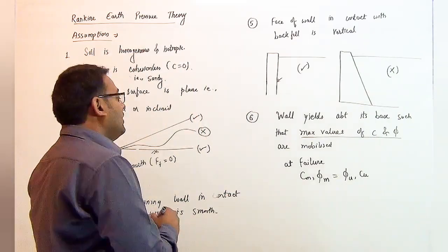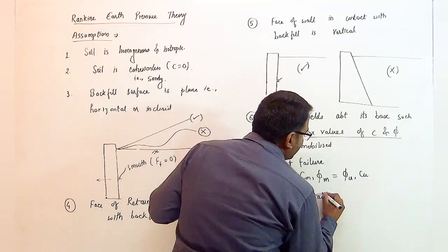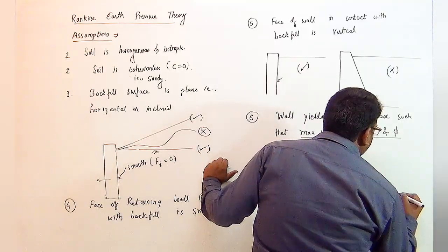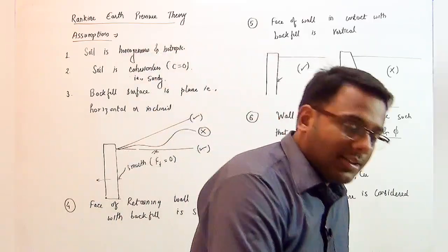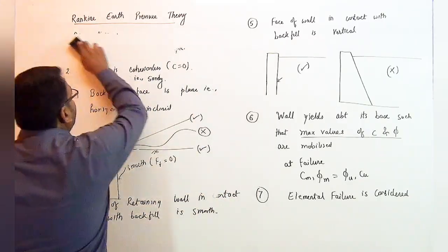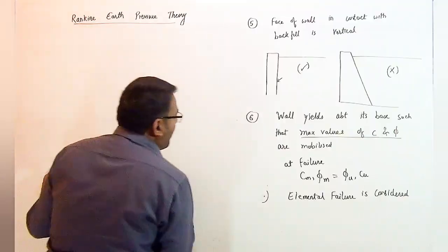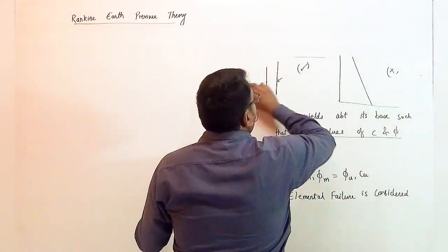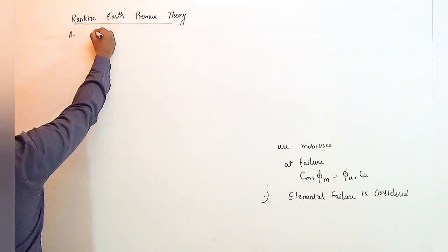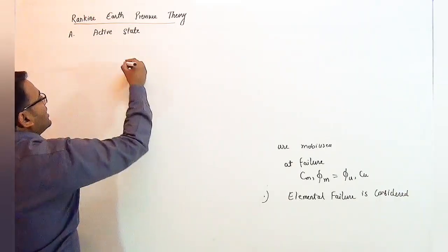Another important assumption is that elemental failure is considered. Elemental failure means that whenever you study the soil, you study with an element of that soil. The application of Rankine's earth pressure theory is straightforward. For the first case, we take the active state of soil and study with an element of the given soil.